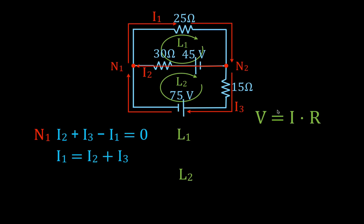Starting with loop one, going clockwise from the upper left corner: we encounter the 25 ohm resistor. We're going in the same direction as I1, so that's a voltage drop — we write minus 25·I1. Continuing around, we encounter the 45 volt source going from negative to positive terminal, so we write plus 45. Then we encounter the 30 ohm resistor going in the same direction as I2 — another voltage drop — so we write minus 30·I2. Summing all terms and setting equal to zero gives our loop 1 equation.